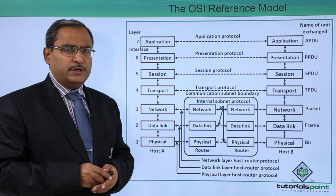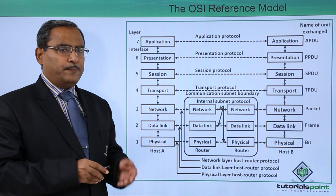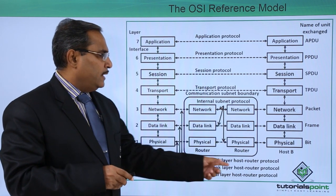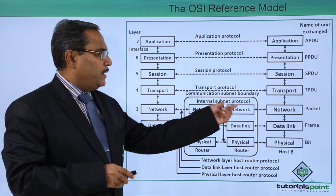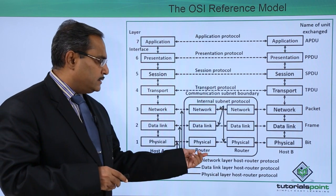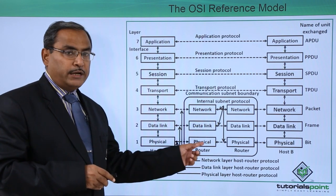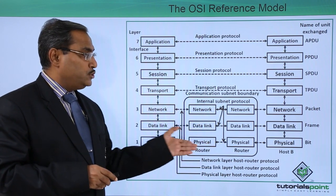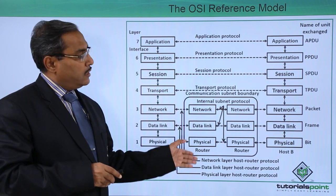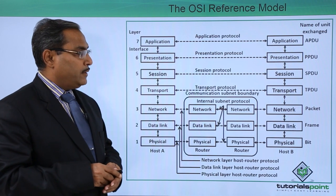In the next chapters we will be discussing the router. A router works up to the network layer, which is why it is shown that there is an internal subnet protocol. This shows how one router communicates with another router — that is, the network layer up to which the router works, which is why it is called the internal subnet protocol.